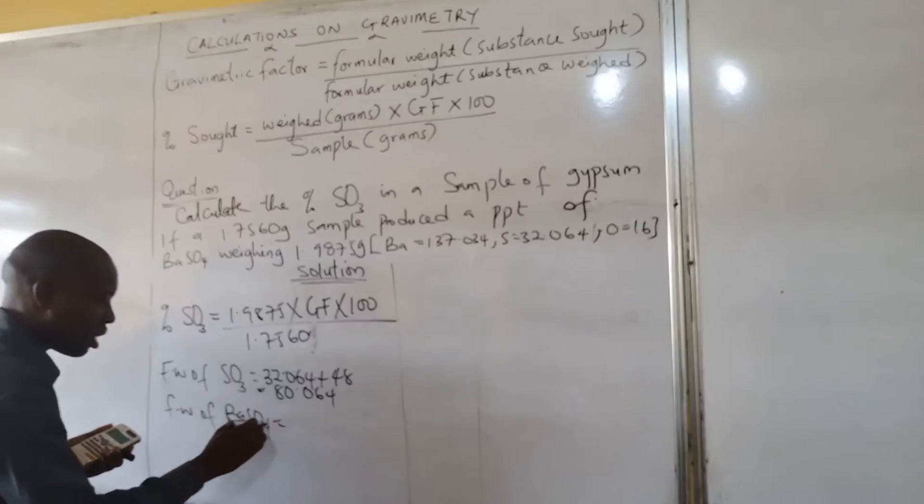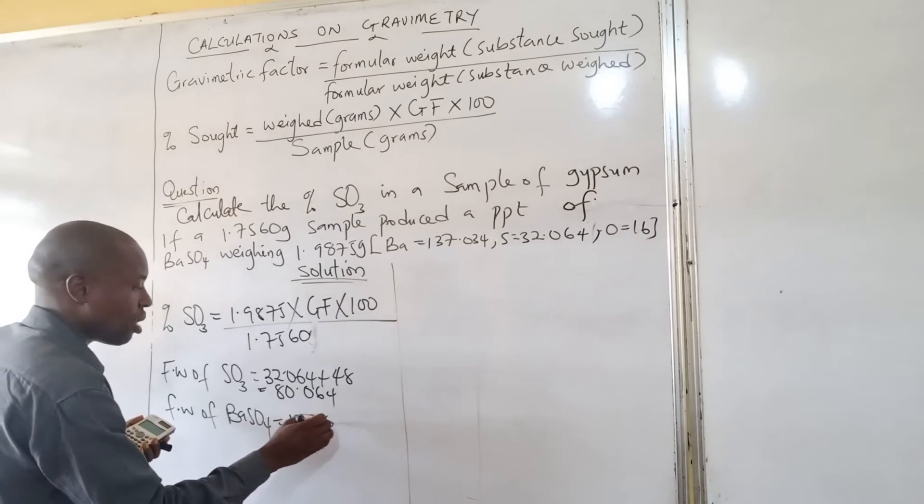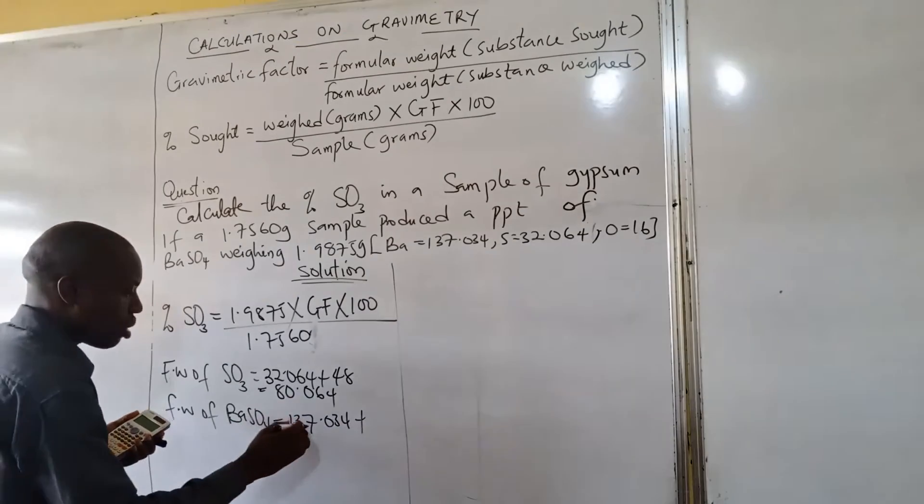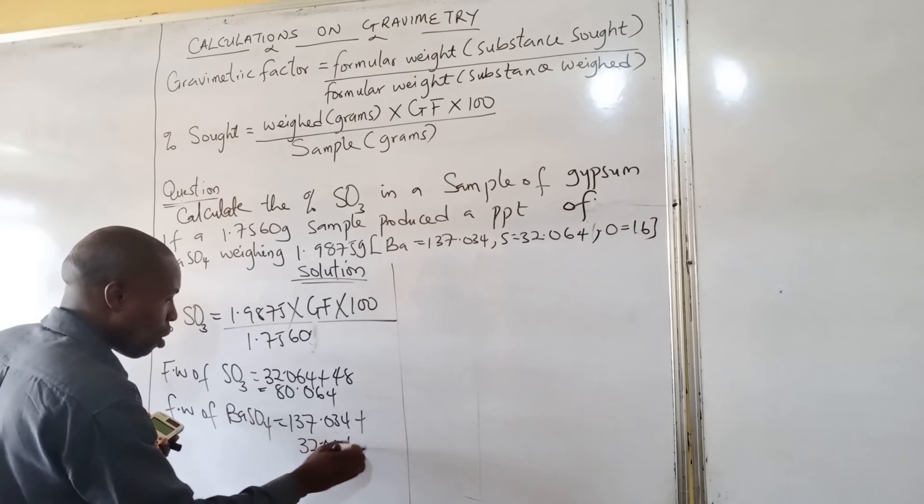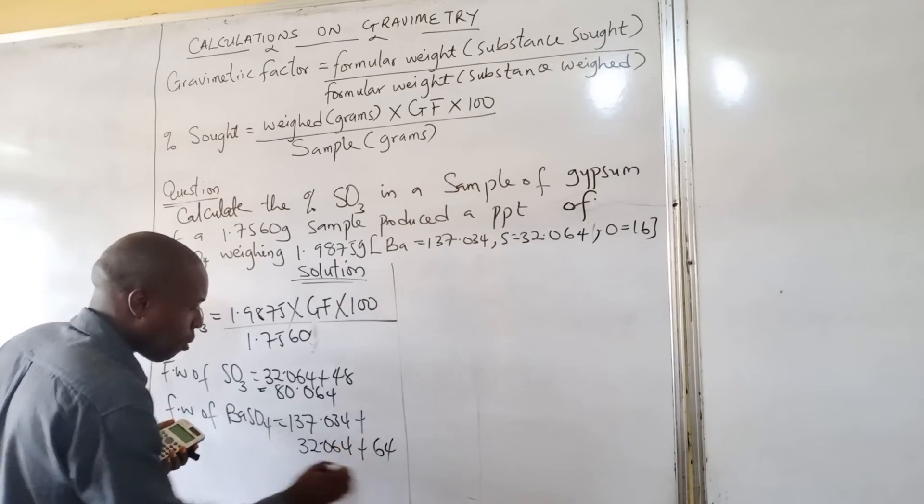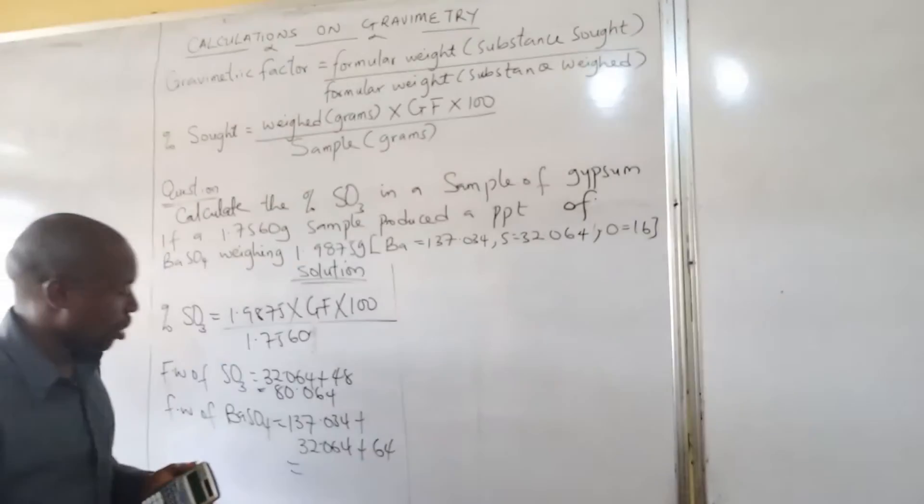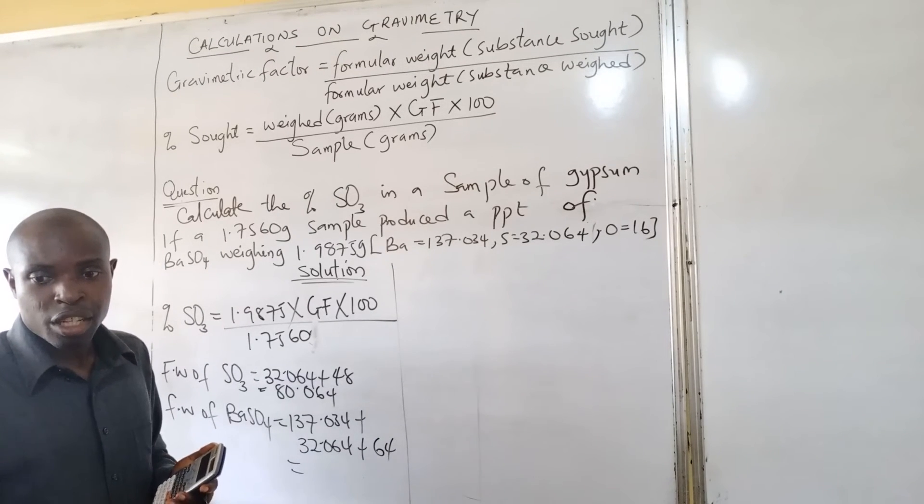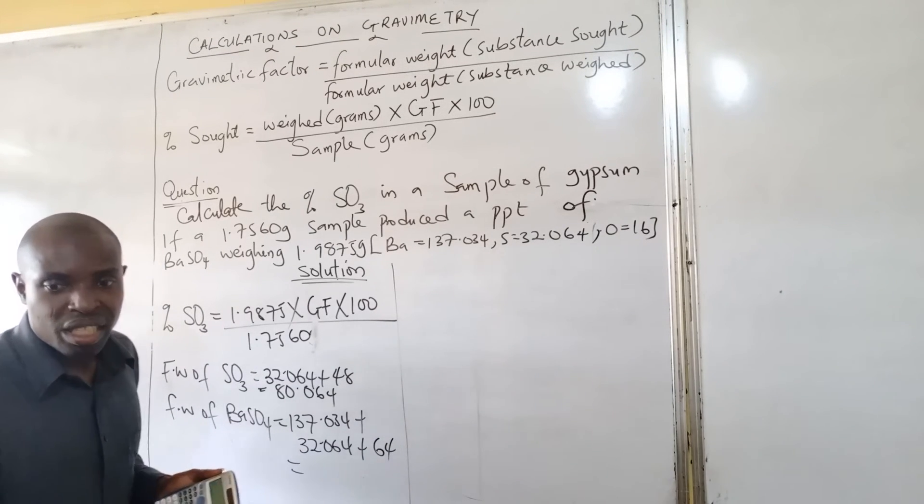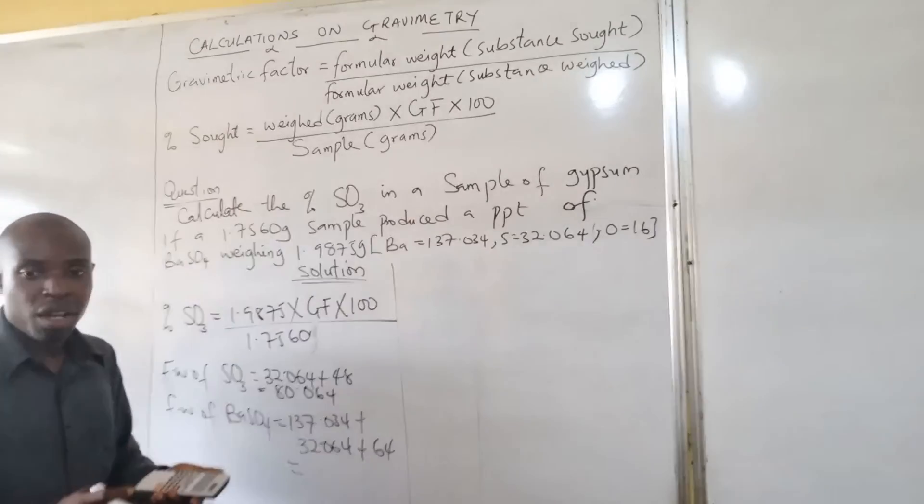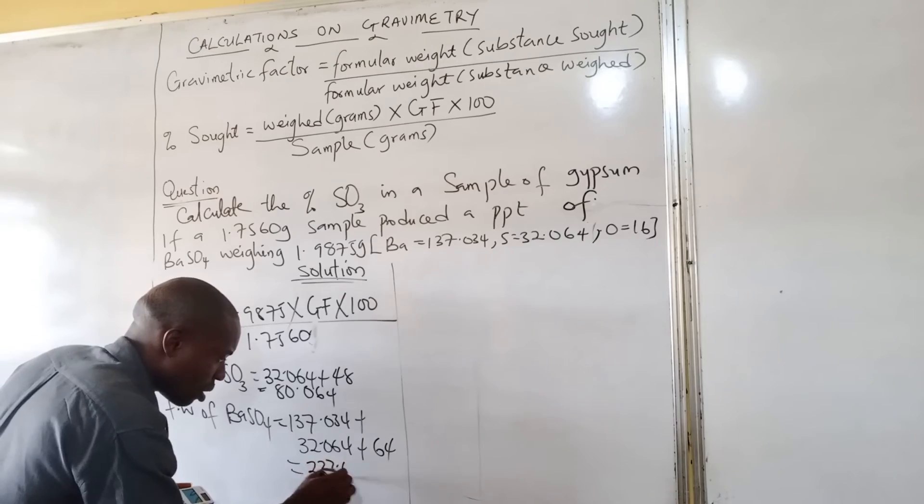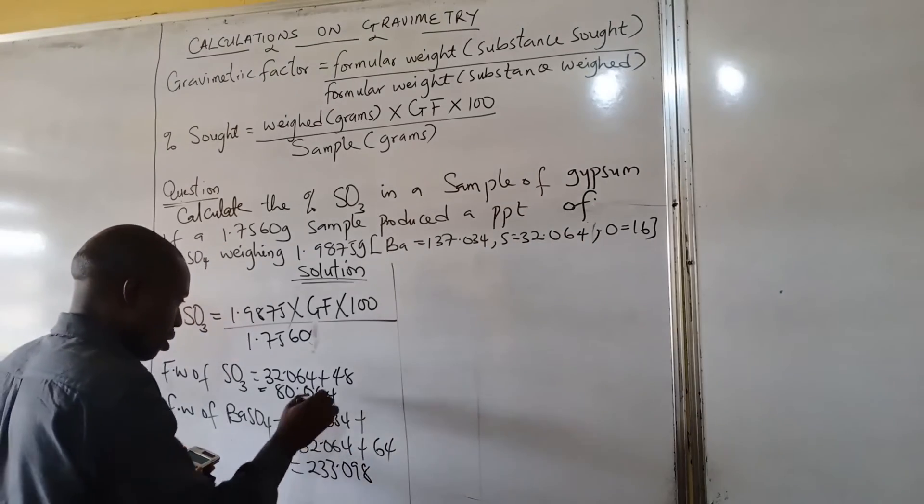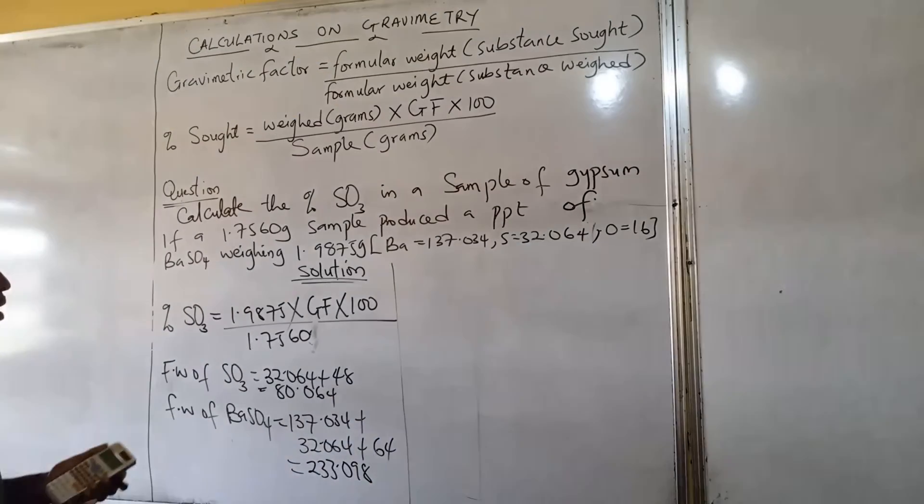Barium, here is 137.034 plus sulfur is 32.064 plus 64. That should be equal to 233.098.